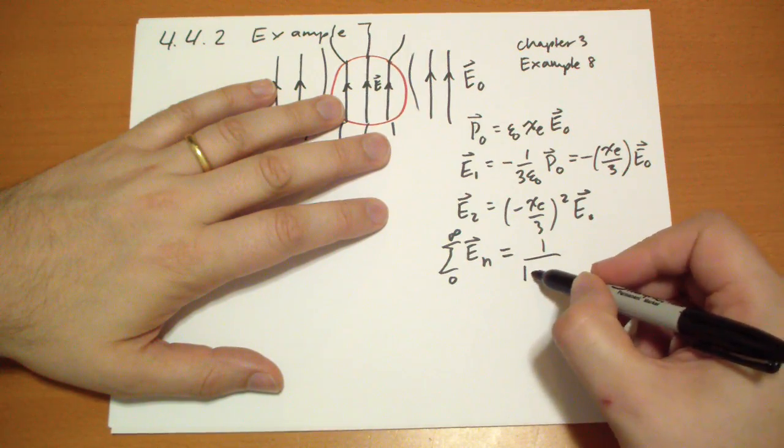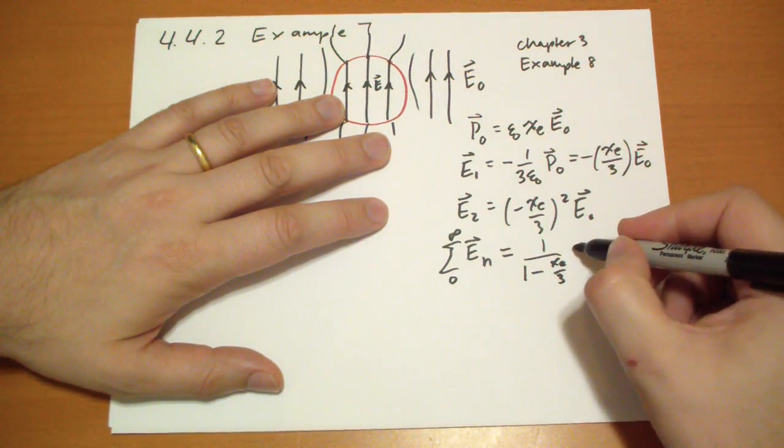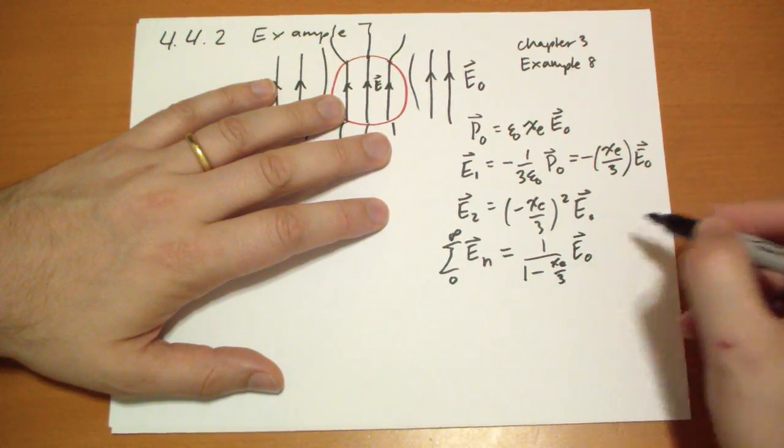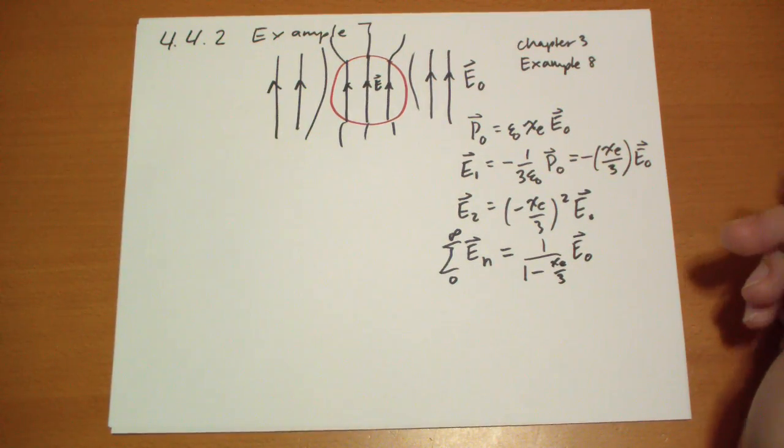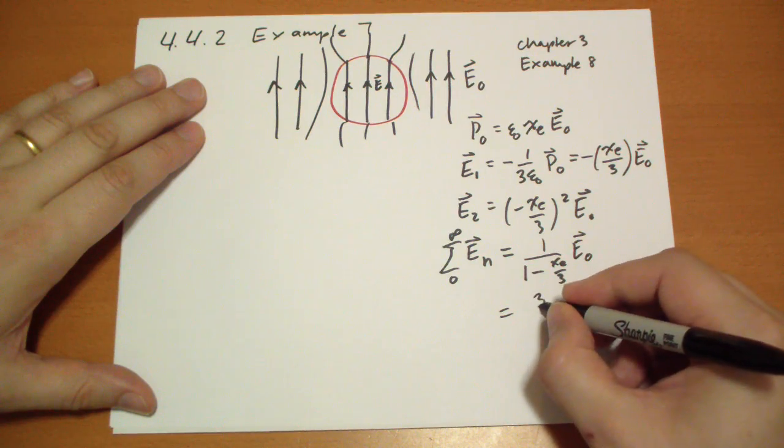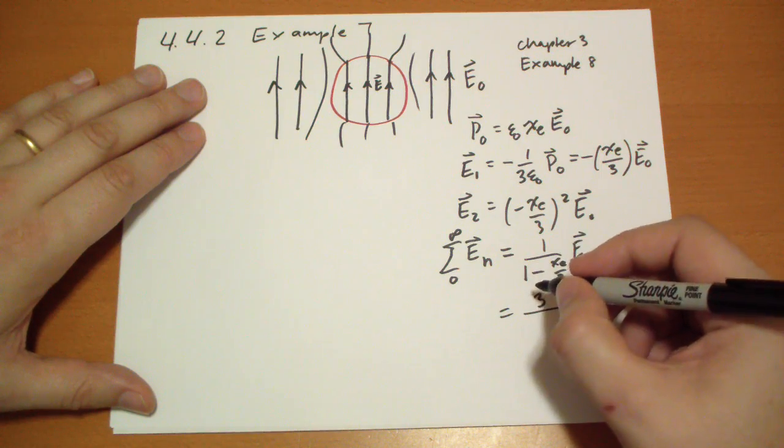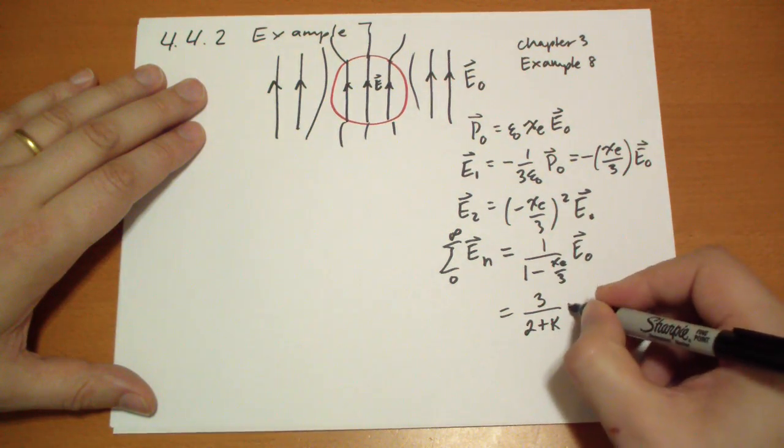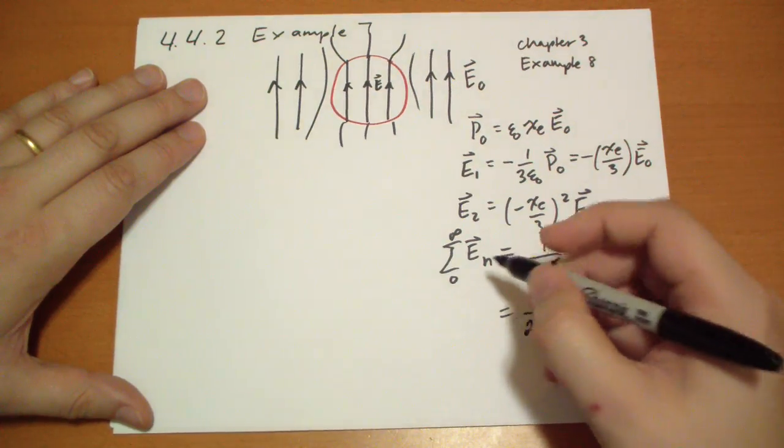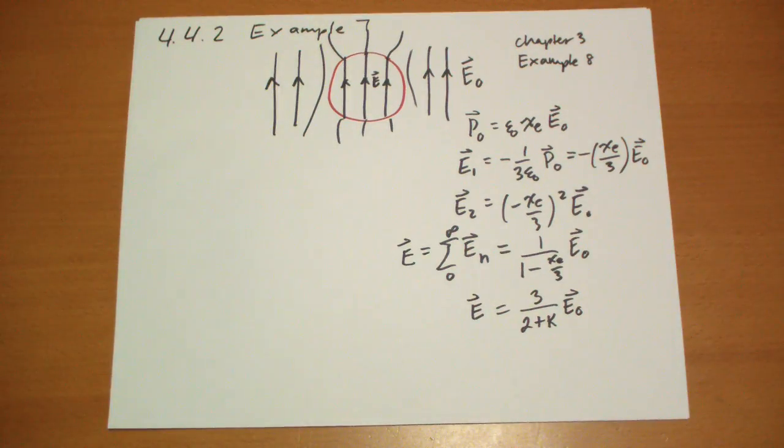This is equal to 1 over 1 minus χₑ over 3, the thing that we're taking the exponential of, times the electric field. That's the geometric series result there. So another way to write this could be, you multiply top and bottom by 3, and you get 3 minus χₑ. Well, k is equal to 1 plus χₑ, so that's the same as 2 plus k times the original electric field. So this turns out to be the resulting electric field after doing this an infinite number of times.